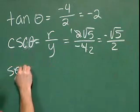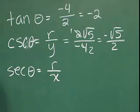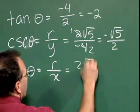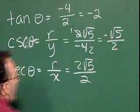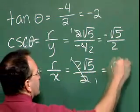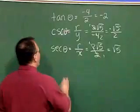Secant theta. The secant of theta is equal to r over x. r, we said was 2 square roots of 5, x is 2, those reduced down to 1 each, and we get that the secant of theta is the square root of 5.